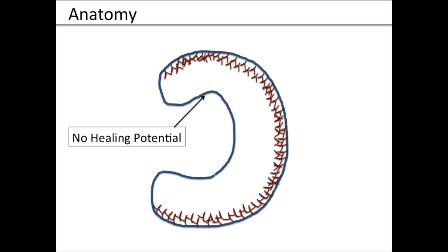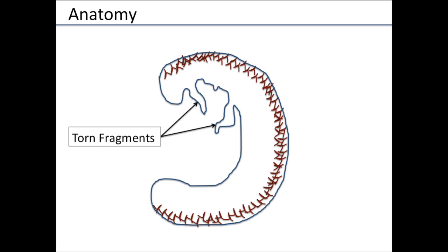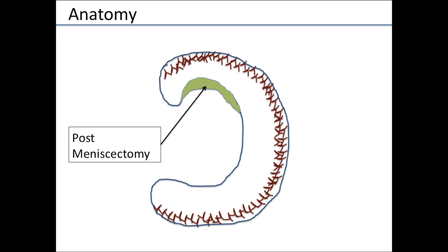On the inner side of the meniscus, there is no blood supply, so there's no healing potential. So if someone were to have a tear with fragments torn on the inner side of the meniscus, it can't be fixed because there's no blood supply. What we do in those scenarios is remove the torn fragments — what we call a partial meniscectomy.